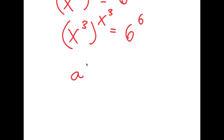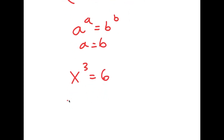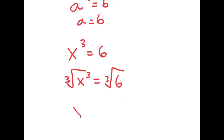If a to the power of a equals b to the power of b, then a equals b. So in this case x to the power of 3 equals 6. Taking the cube root on both sides, x equals the cube root of 6.